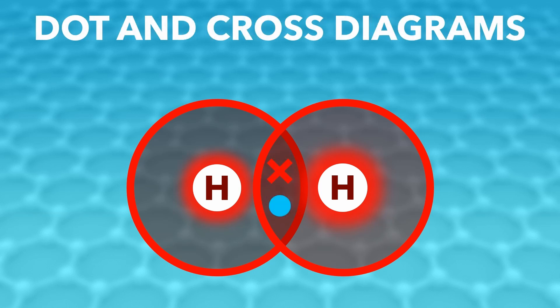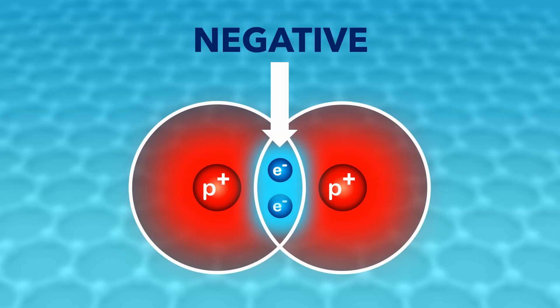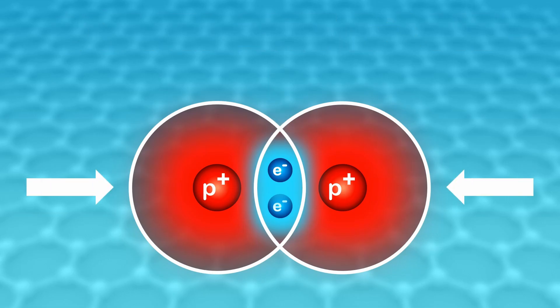Dot and cross diagrams tell us which electron belongs to which atom. The covalent bond is caused by the attractive force between the positive nuclei and the negative electron pair, making covalent bonds very strong.